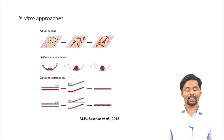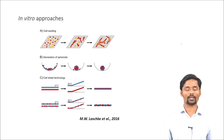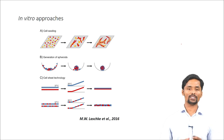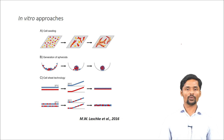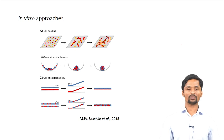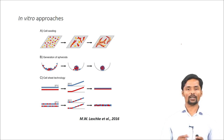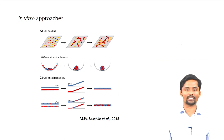The third in vitro approach is cell sheet technology, which is devoid of any scaffolds. This technique uses thermosensitive polymers, for example poly(N-isopropylacrylamide). At 37°C, the thermosensitive polymer allows cell adhesion, so you seed endothelial cells and tissue-specific cells onto the polymer and incubate until monolayer formation. Once the monolayer is formed, you decrease the temperature to 20°C. At 20°C, the polymer swells and loses its cell adhesion property, causing the monolayer to peel off. These monolayers are stacked and transferred to the site of interest, thereby achieving vascular network formation.